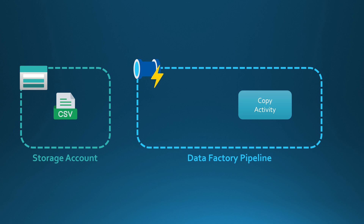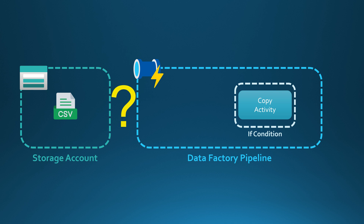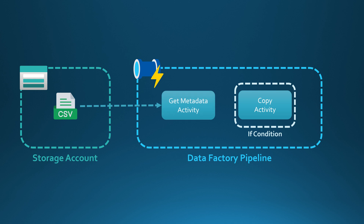However, we have wrapped this copy activity in an if condition. We would only like to run this copy activity if the CSV file has been modified during the past 24 hours. We can use the Get Metadata activity in Data Factory to fetch the last modified timestamp of the CSV file, and then have the logic in our if condition to only run the copy activity if the file has been modified in the last 24 hours.